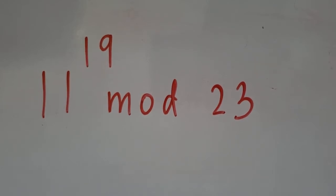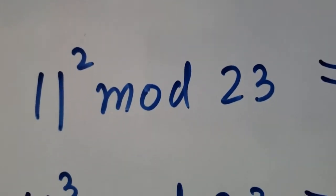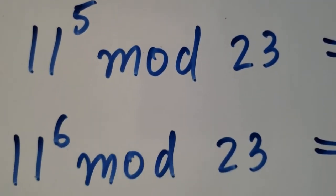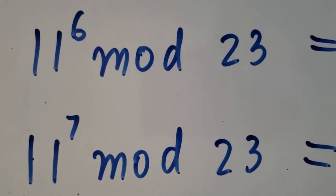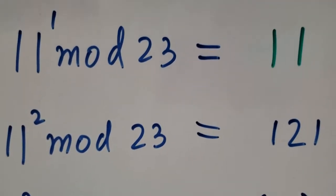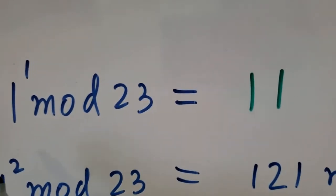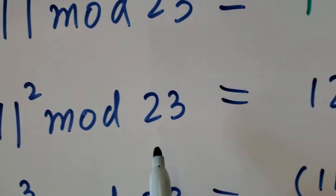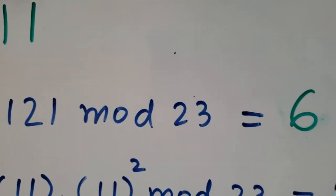First we calculate values of 11 to the power 1, 11 to the power 2, 11 to the power 3, 11 to the power 4, 11 to the power 5, 11 to the power 6, and 11 to the power 7. We can go further if needed, but for now I'm going to go till 11 to the power 7. Starting with 11 to the power 1: 11 to the power 1 mod 23 is 11. 11 to the power 2 mod 23 is 121 mod 23, which is 6.